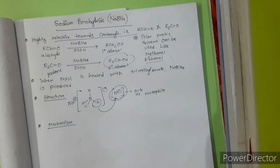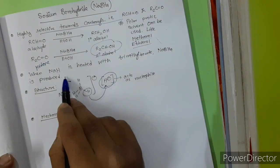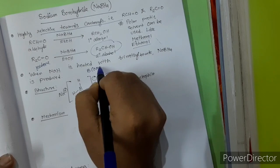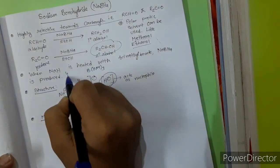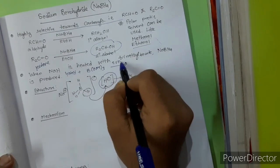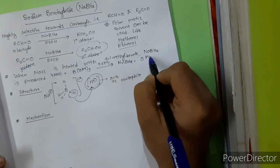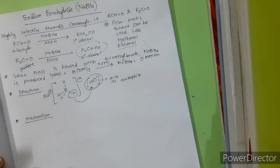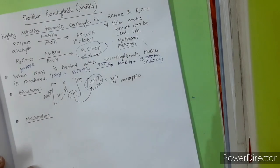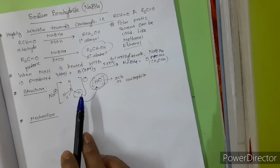Now, how is sodium borohydride prepared? It is prepared when sodium hydride is heated with trimethyl borate. This is the structure of trimethyl borate: B(OMe)₃. When it is heated with sodium hydride at 250 degrees centigrade, it produces NaBH4 and three molecules of NaOMe. This is the preparation for sodium borohydride.